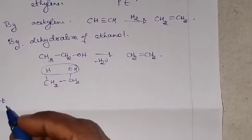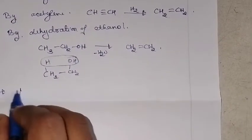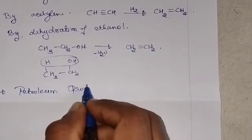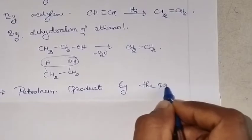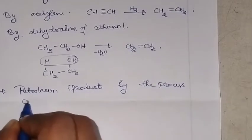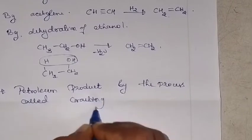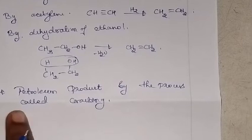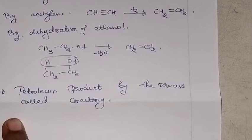The third method is by the petroleum product. You can also get ethylene by the process called cracking. So these are the three methods to get your starting material for polyethylene, that is ethylene.